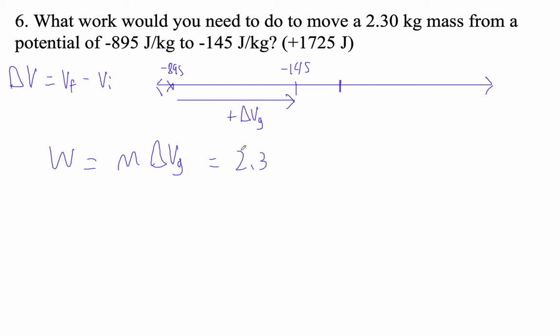So that is going to be 2.3, and our final is negative 145, and then subtract our initial, which is the opposite of 895, right? Minus a minus.